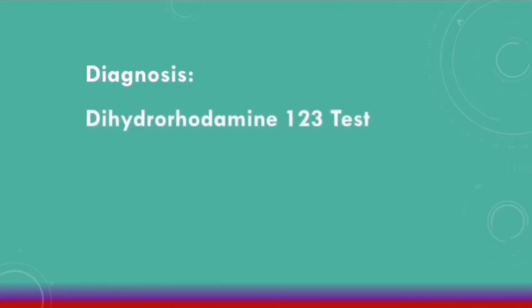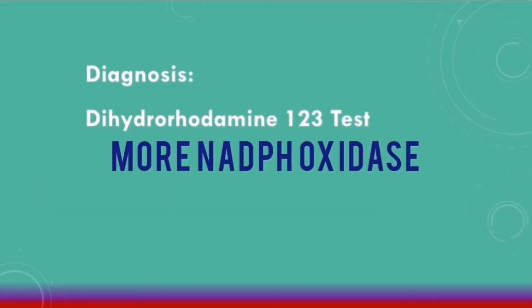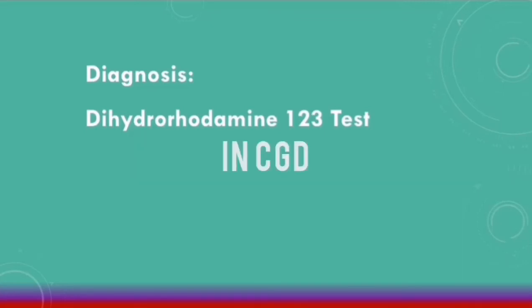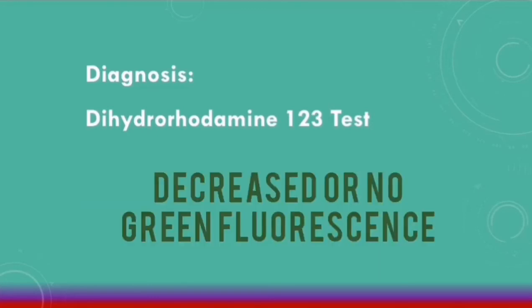In terms of diagnosing chronic granulomatous disease, a test called the dihydrorhodamine 123 (DHR123) test can be done. This test detects the amount of functional NADPH oxidase in the blood — the more NADPH oxidase present, the more green fluorescence is seen. In CGD, due to low levels of functional NADPH oxidase, there will be decreased or no green fluorescence on this test.